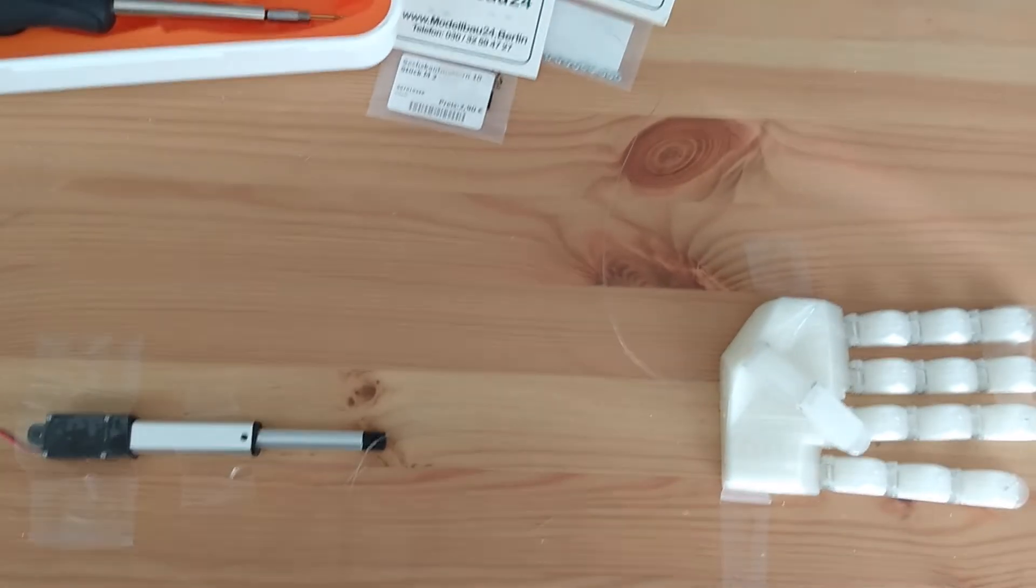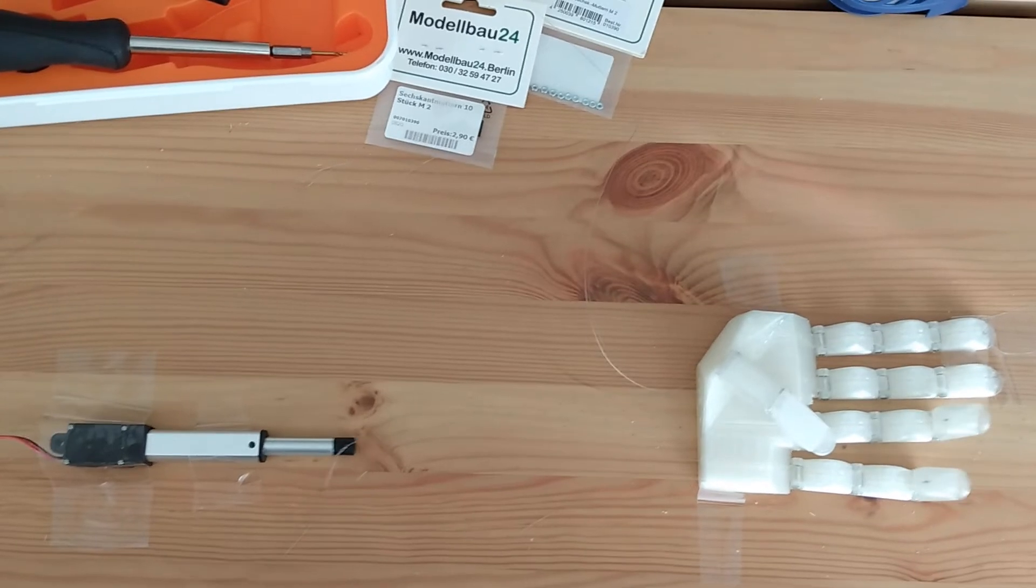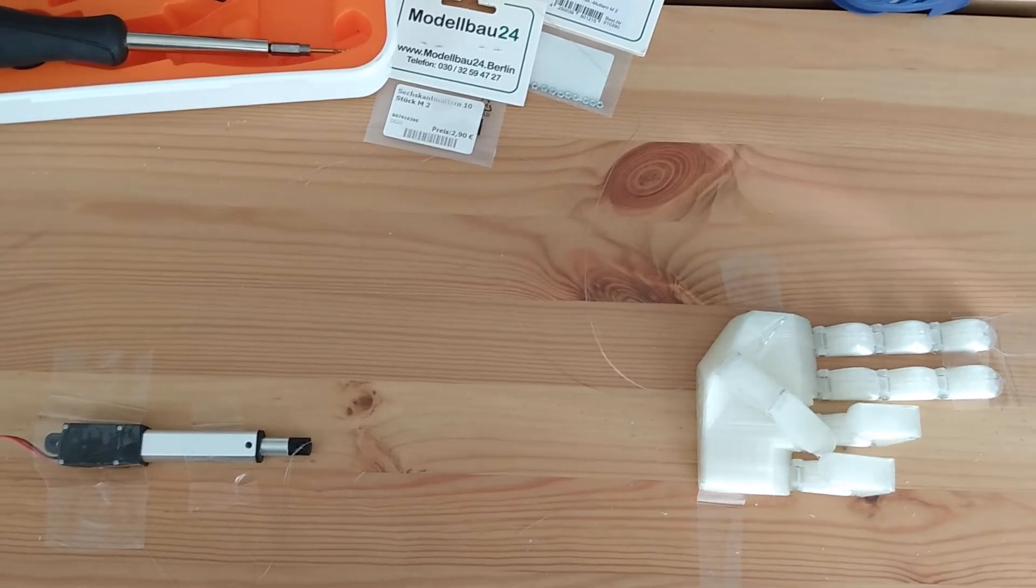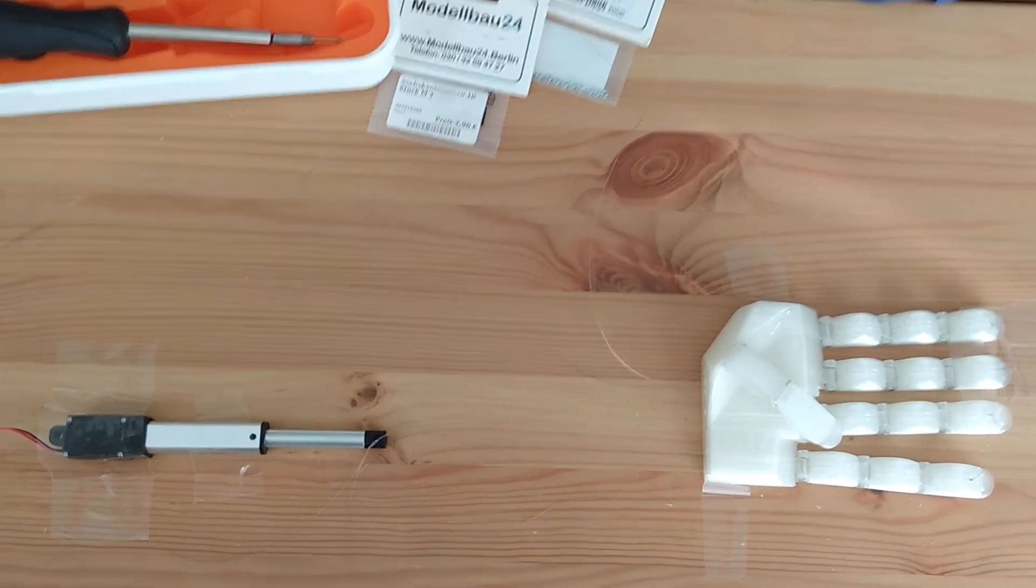Now I have two linear actuators that each pull with 30 newtons of force for a total of 60 newtons. Compare that to our 20 newtons from the last experiment. I'm hoping this will be more than enough force for a functional grip.